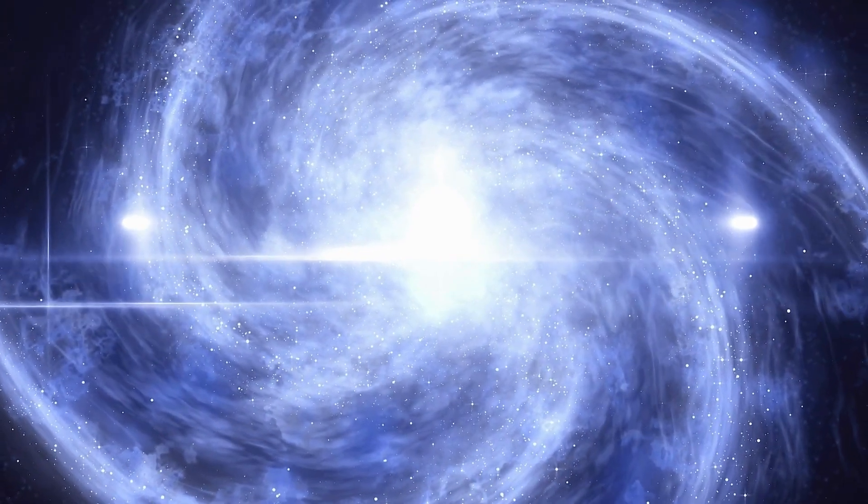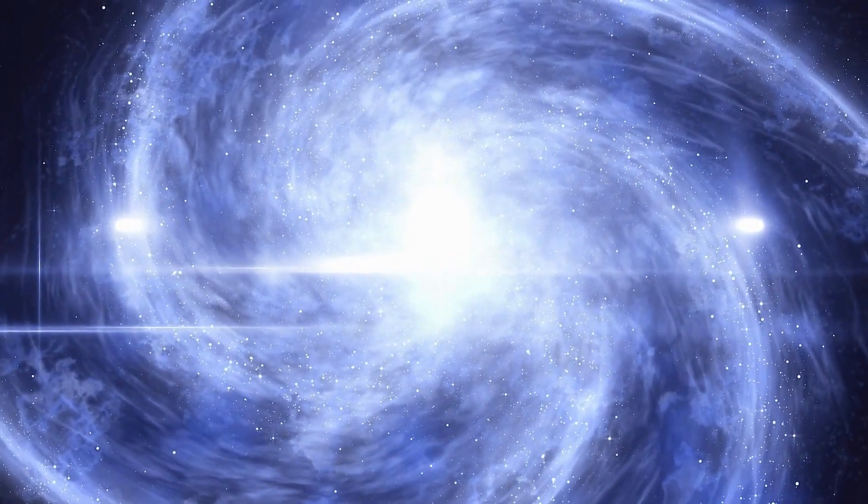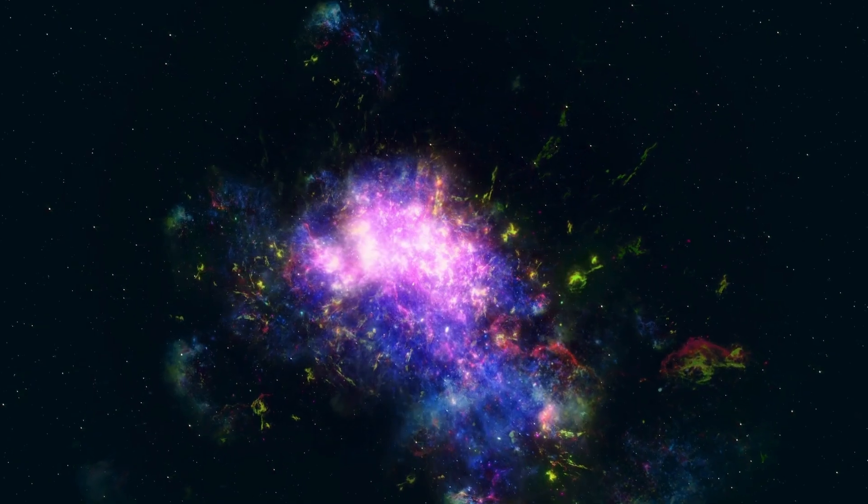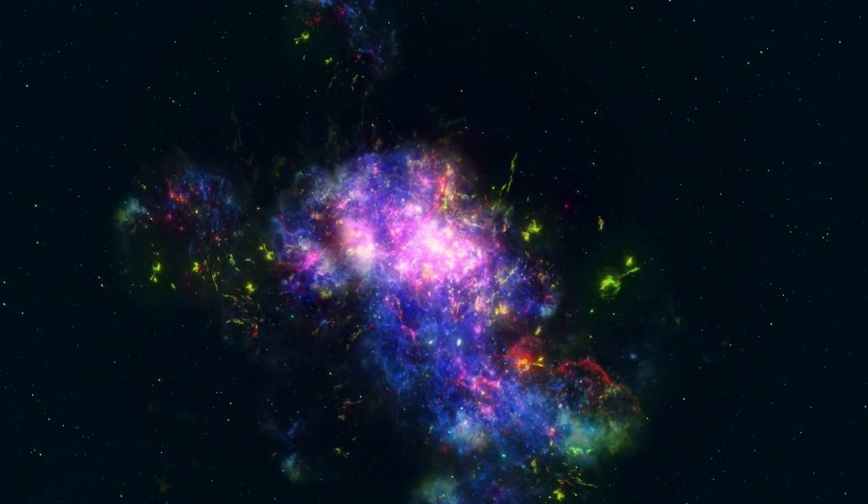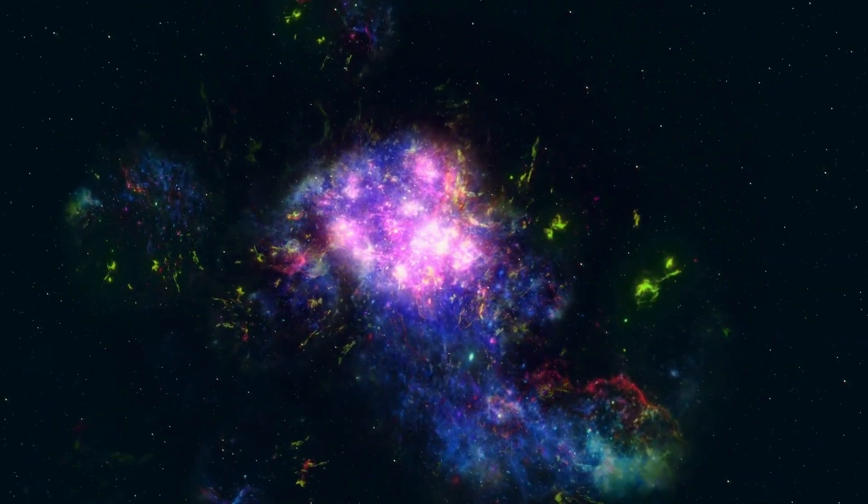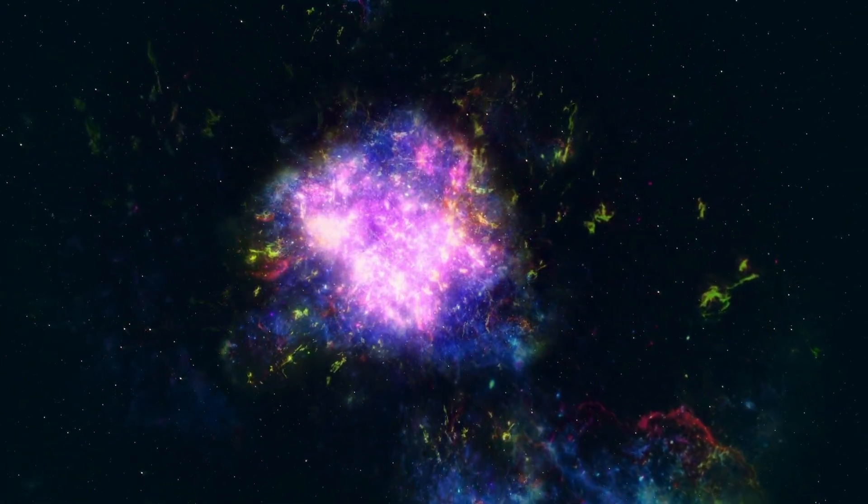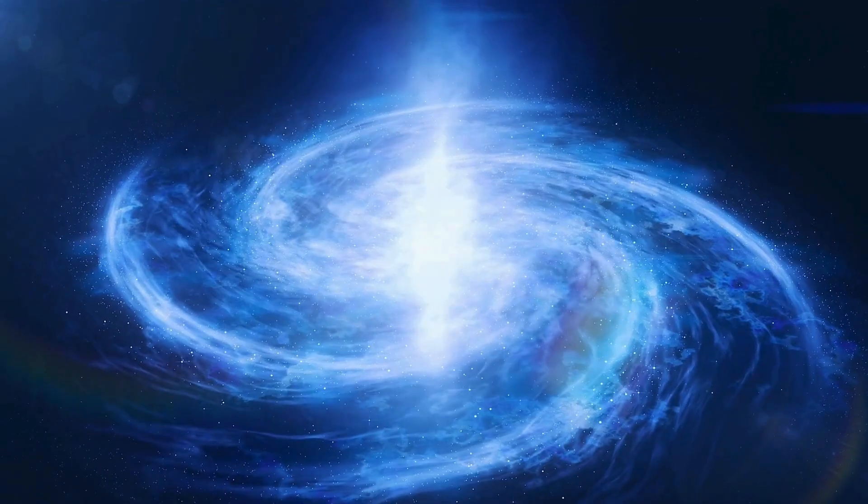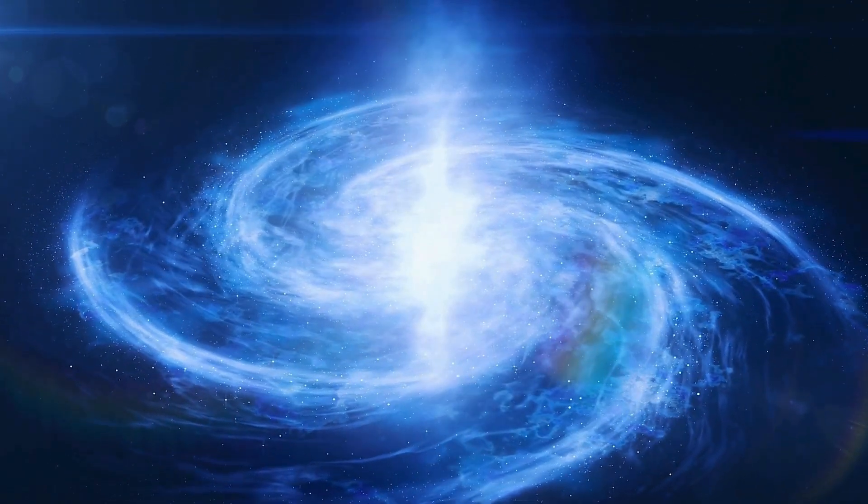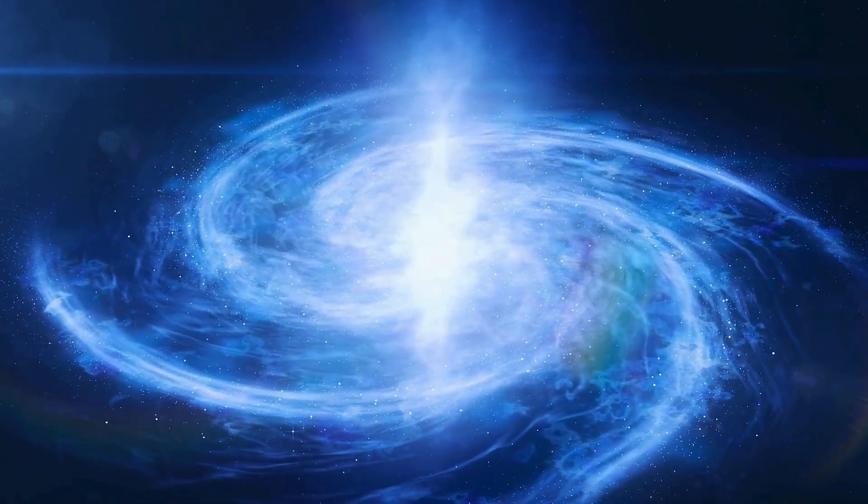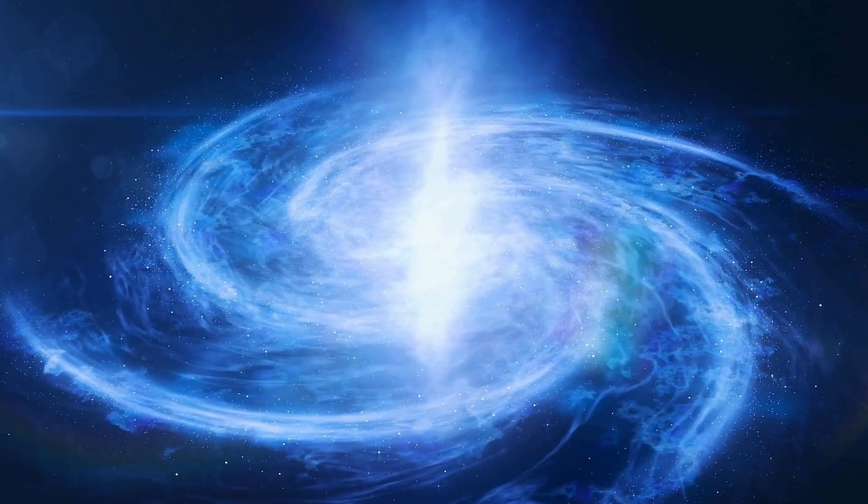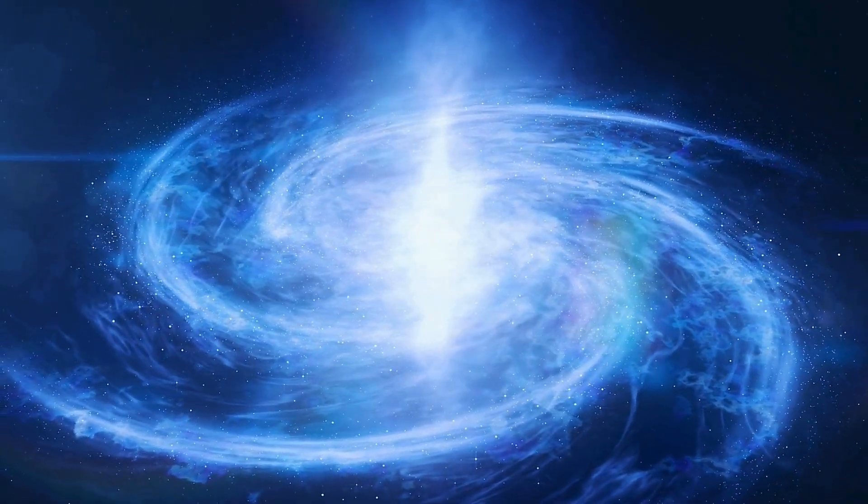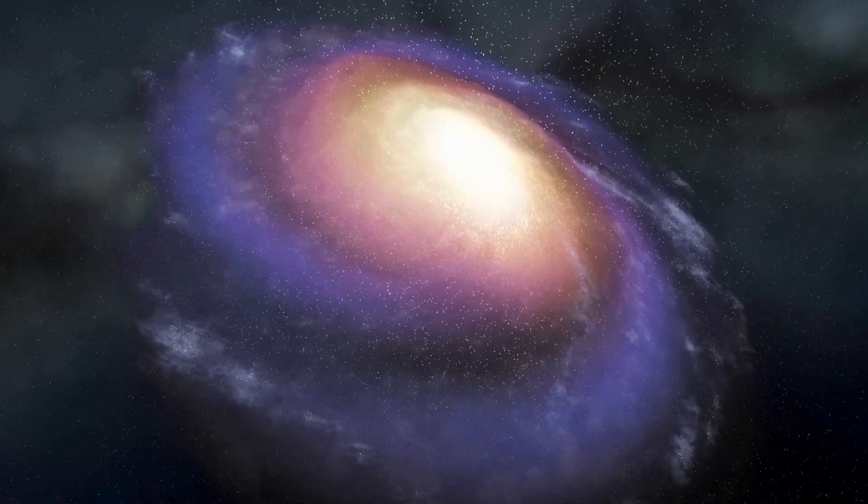A white dwarf is a small, extremely dense stellar remnant formed from the core of a star after it has exhausted its nuclear fuel and undergone gravitational collapse. These remnants are composed mostly of electron-degenerate matter, with a mass comparable to that of the Sun but condensed into a much smaller volume. Despite their high density, white dwarfs emit very little light and gradually cool over billions of years, eventually becoming faint objects known as black dwarfs.